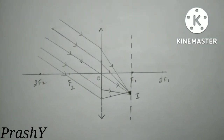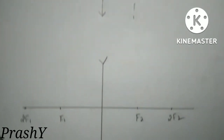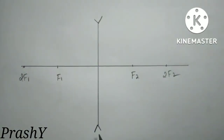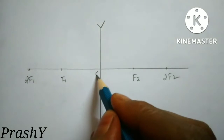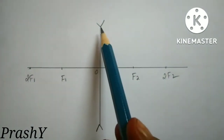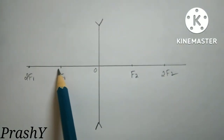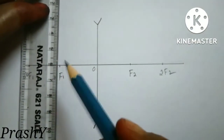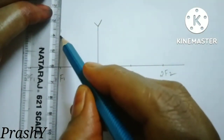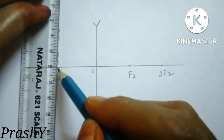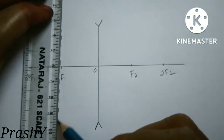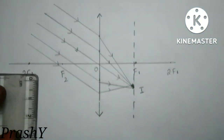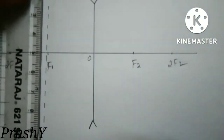Now let us learn how to draw for a concave lens. This is our concave lens and this is the principal axis with optic center. For a concave lens the focus is virtual and it is at F1, behind the lens. So I am drawing the focal plane at F1. For both convex and concave lens, the focal plane is drawn at F1.